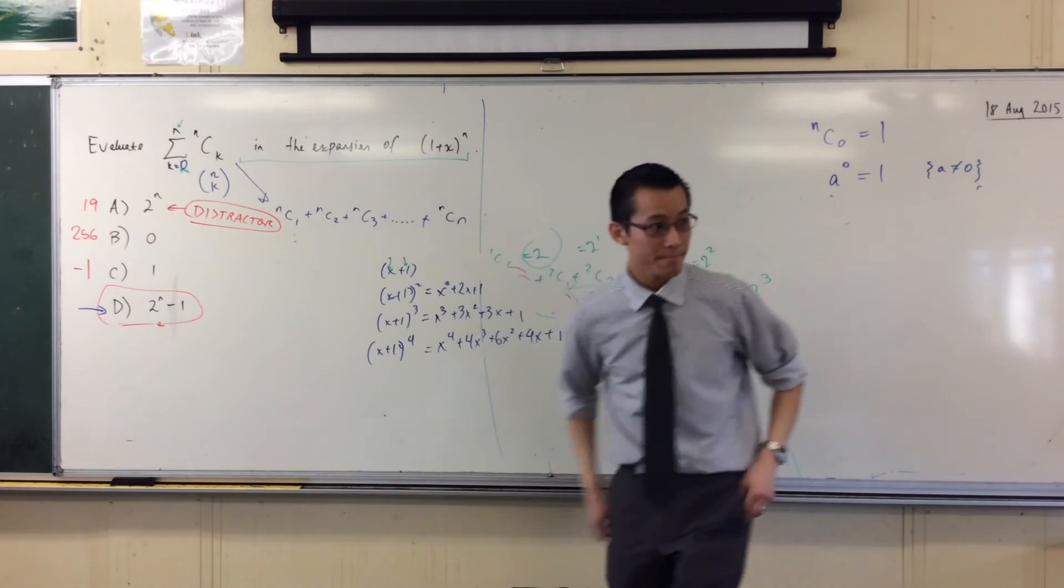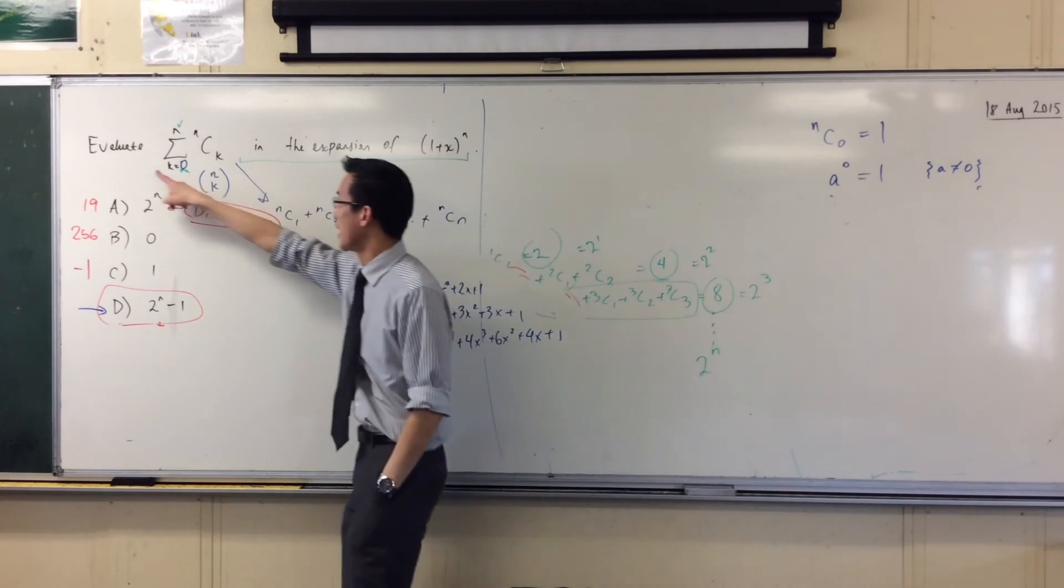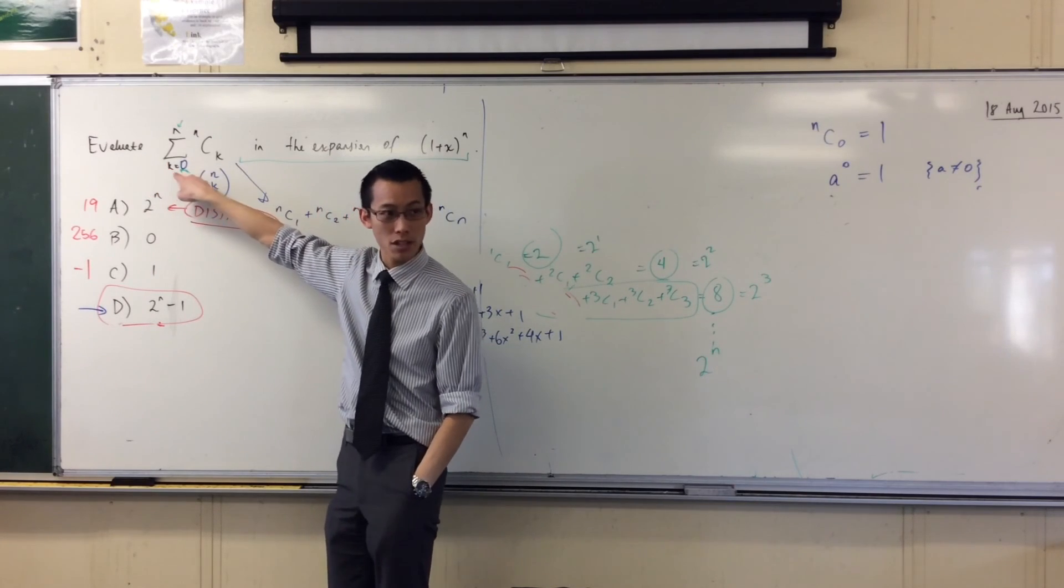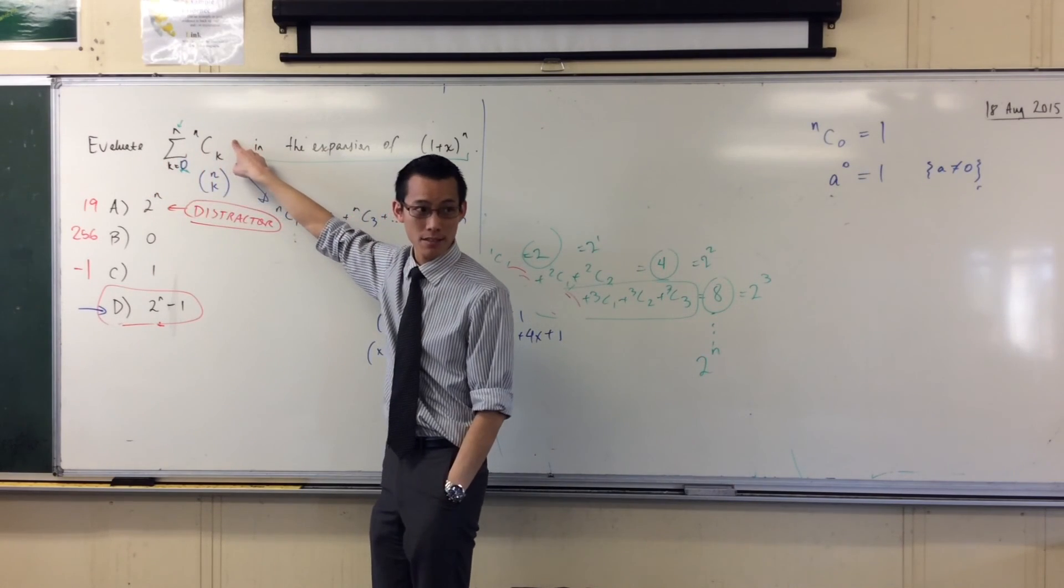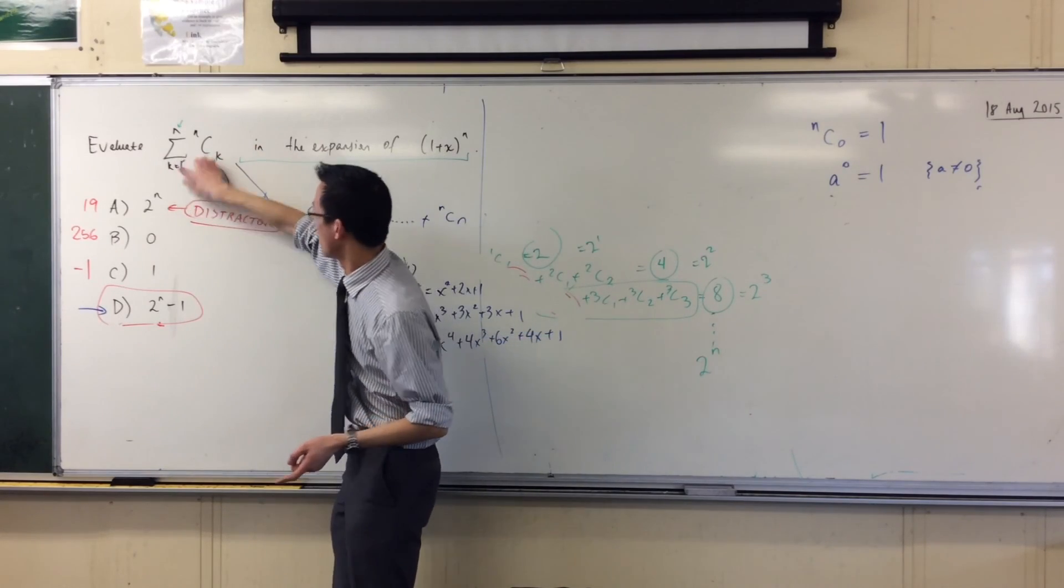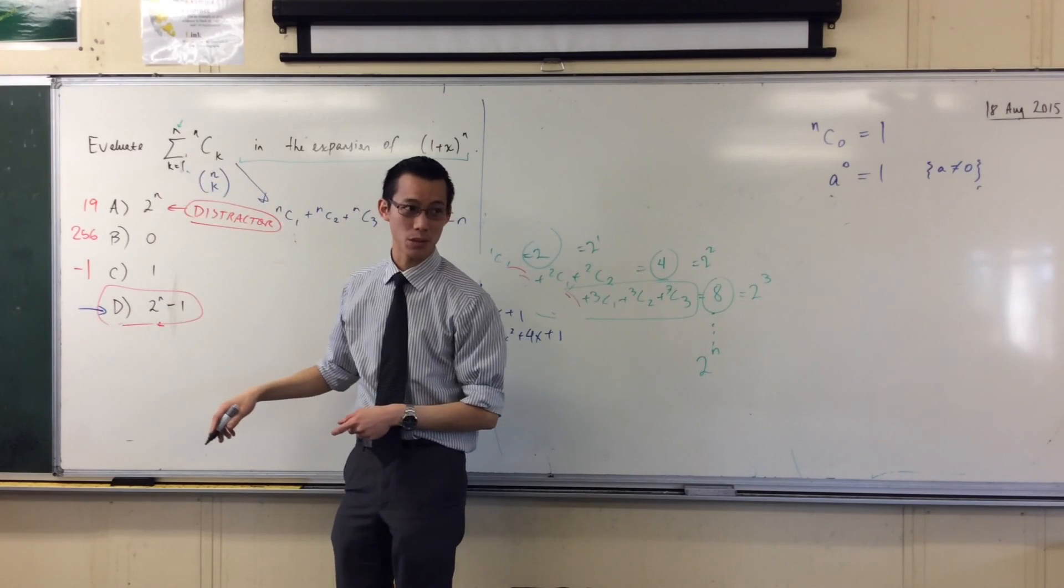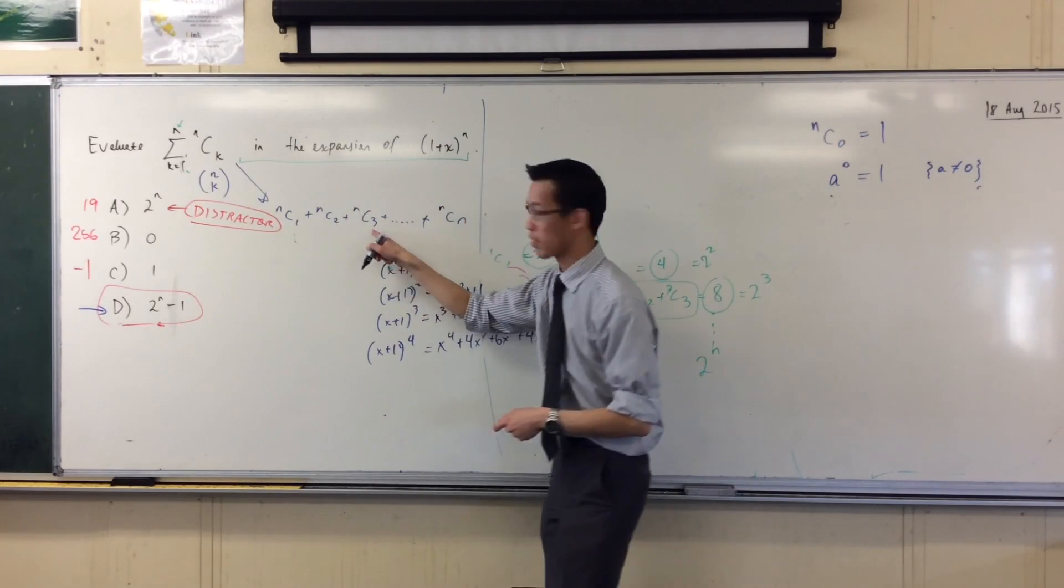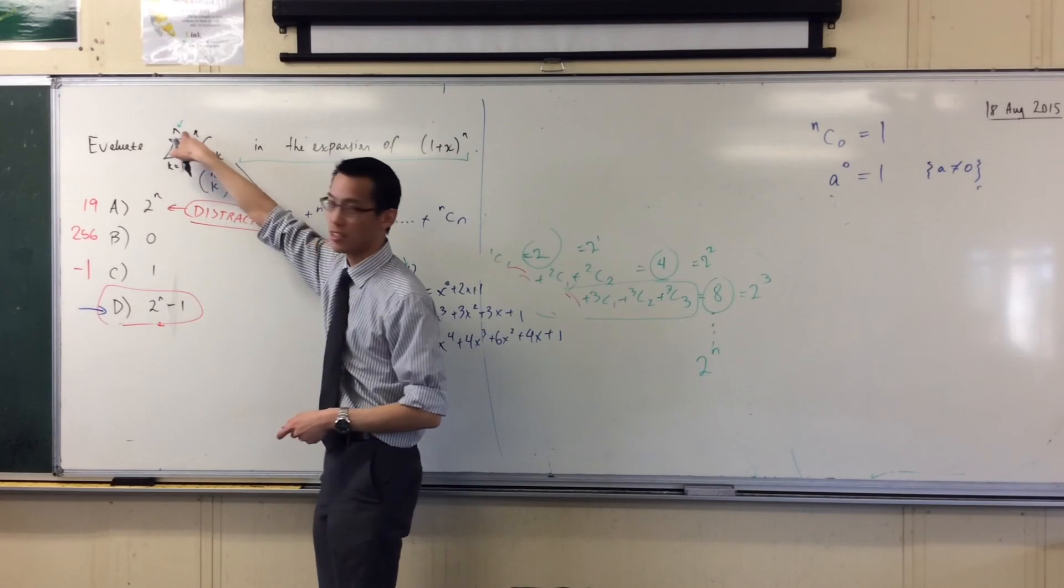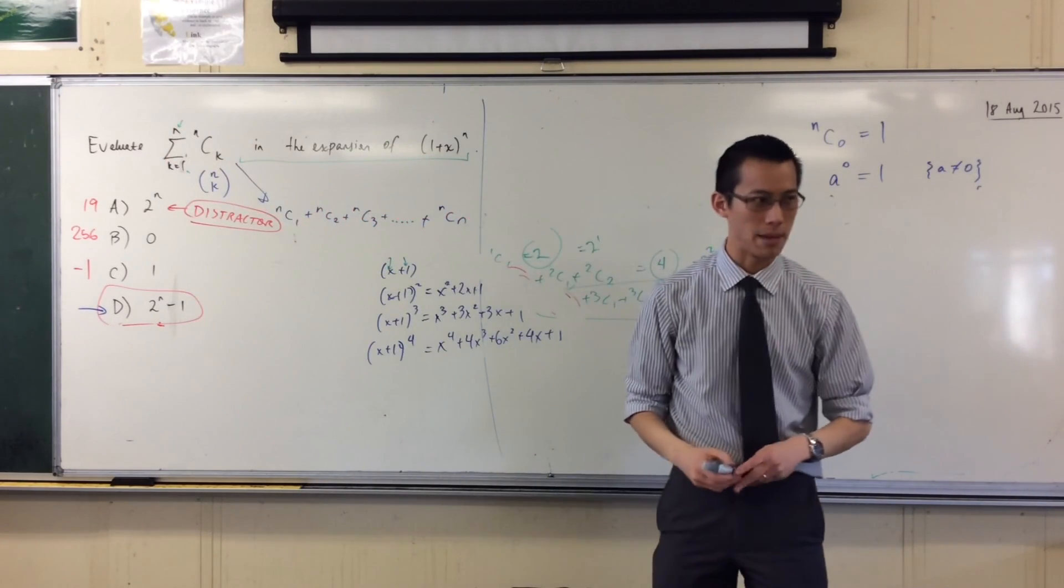So what is this question verbally saying, like in words? Evaluate the sum of all the terms that look like this. But I don't just want one of them. I want the one where k equals one, and the one where k equals two, and the one where k equals three, all the way until it's m, and then stop. That's what sigma notation means.